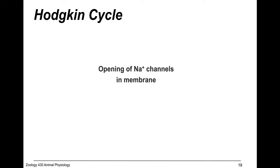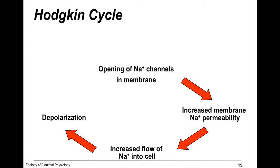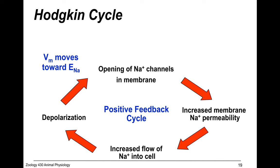The Hodgkin cycle describes this process: opening of sodium channels makes the membrane permeable to sodium; that sodium permeability causes sodium to flood into the cell, depolarizing neighboring ion channels, causing those channels to open, increasing membrane permeability further — a positive feedback cycle all the way down the axon, with the voltage moving toward the equilibrium potential of sodium.